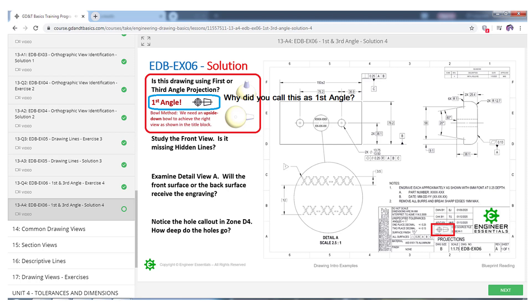So he has also circled question number one up here, so you'll see that on this question it says "Is this drawing using first or third angle projection?" And what he put on here was "Why did you call this first angle?"